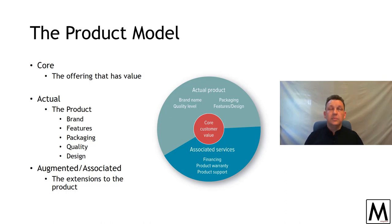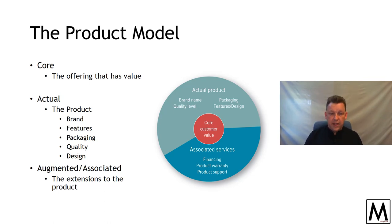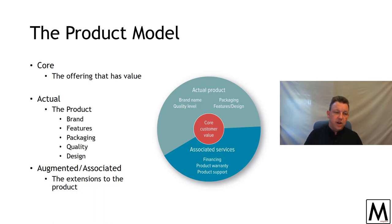Something as basic as a Pepsi Max can: the size of the product, the brand, what it says to be drinking Pepsi versus drinking Coke, the features, the level of caffeine, the flavor, whether it's refrigerated or not, the quality — does it taste like the last can, will it taste like the next can?